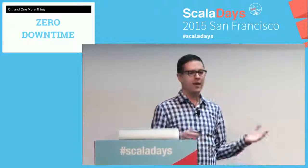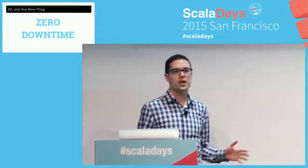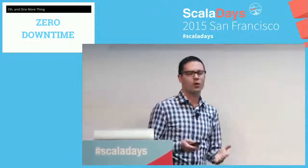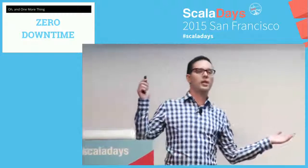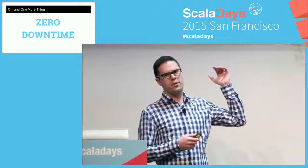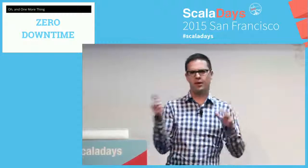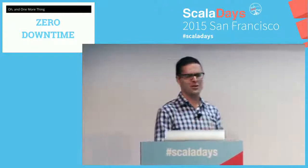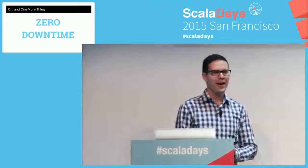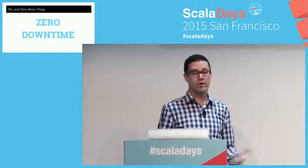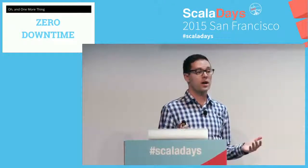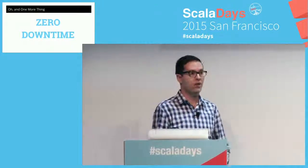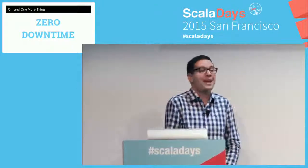And one more thing: zero downtime. We're replacing the wings on the airplane while it's at 30,000 feet and it's full of passengers — pick your own metaphor. We have to do it with zero downtime. Our SLAs indicate that we can't go down; our service offering cannot go down at any time.